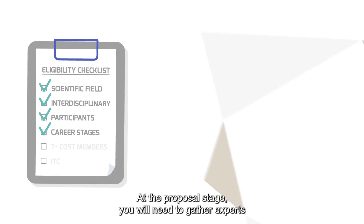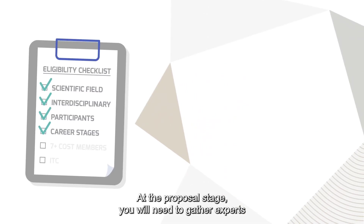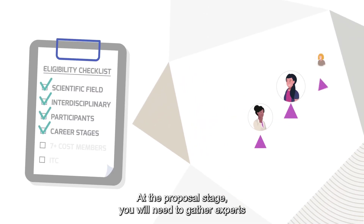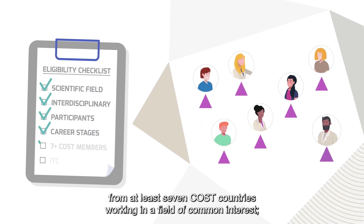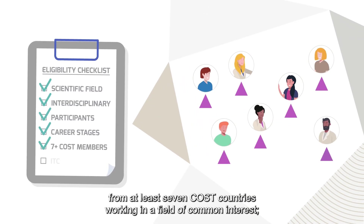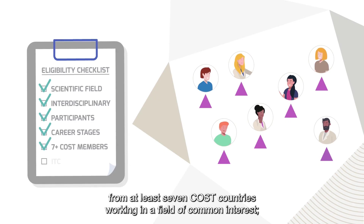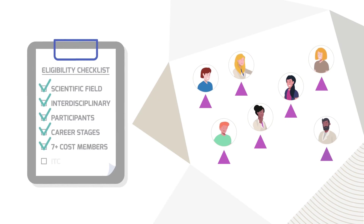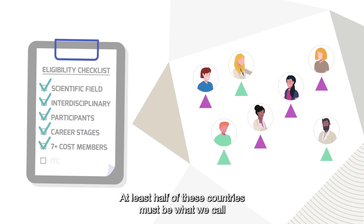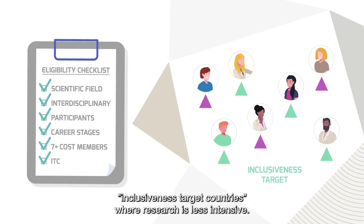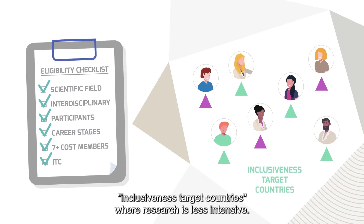At the proposal stage, you will need to gather experts from at least seven COST countries working in a field of common interest. At least half of these countries must be what we call inclusiveness target countries, where research is less intensive.